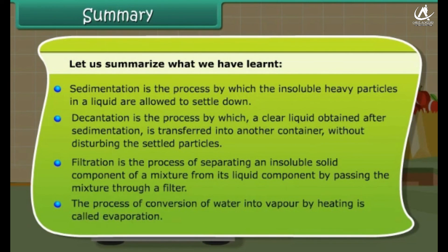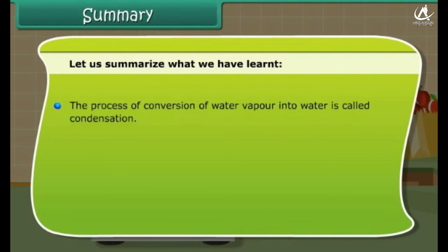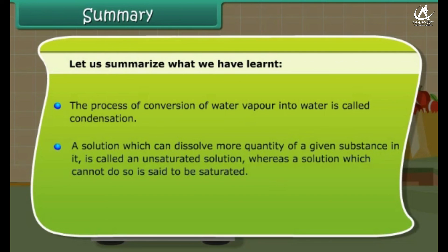The process of conversion of water into vapor by heating is called evaporation. The process of conversion of water vapor into water is called condensation. A solution which can dissolve more quantity of a given substance in it is called an unsaturated solution, whereas a solution which cannot do so is said to be saturated.